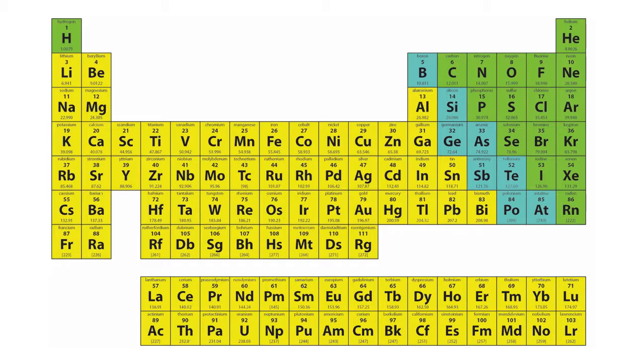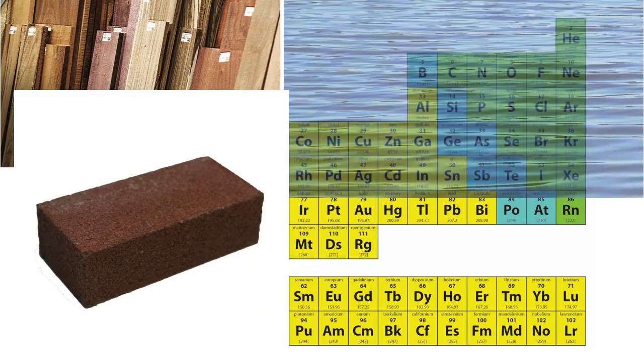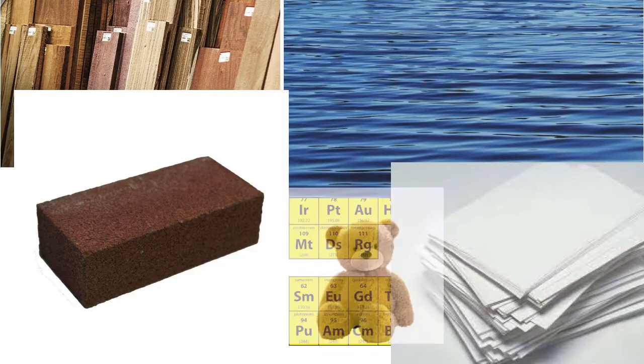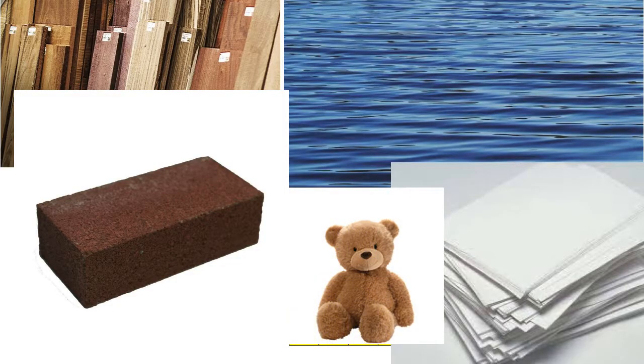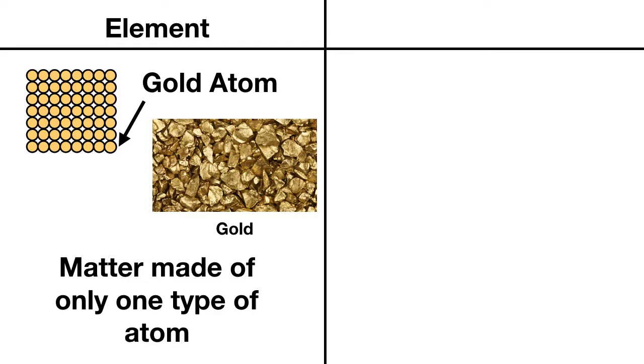What's weird is you can probably think of way more than 100 things right off the top of your head. There's all sorts of materials, like wood or bricks, there's water, there's paper, there's even stuffed animals you play with. How is it that all of this different stuff is only made of 100 different elements? Well, this is possible because most of the things around you are not elements.